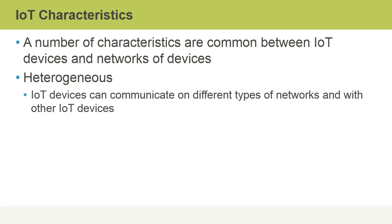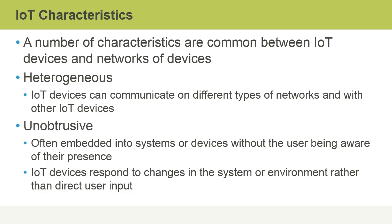Heterogeneous is one of those characteristics. Devices can communicate on different types of networks and with other devices. It's also unobtrusive. Often, embedded systems and devices will be completely transparent to the user. Internet of Things devices also respond to changes in the system or the environment rather than direct user input.